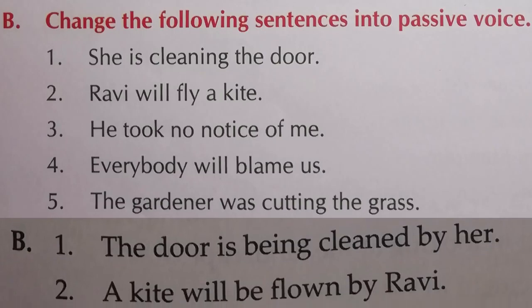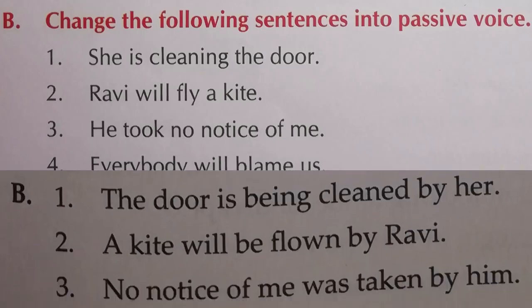As I mentioned, V3 is applied — 'cleaned' instead of 'cleaning,' 'flown' instead of 'fly.' V3 will be used in every sentence. Third: 'He took no notice of me.' 'No notice of me' will come in the first place as subject, and 'by him' — 'he' becomes 'him' — at the last. Answer: 'No notice of me was taken by him.'